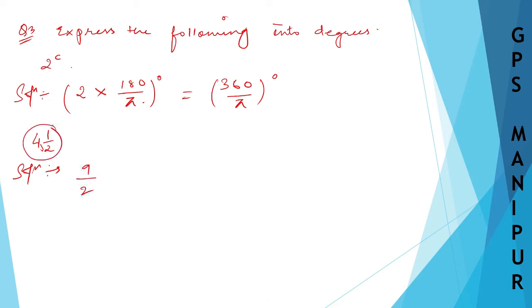I hope you know how to convert this one into mixed fraction. What we need to do is 4 into 2 plus 1 divided by 2. This is how we convert this into improper fraction.